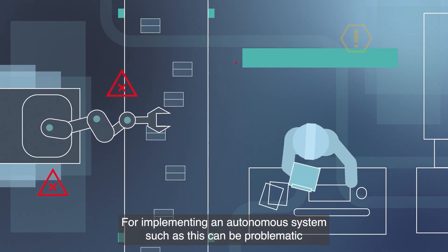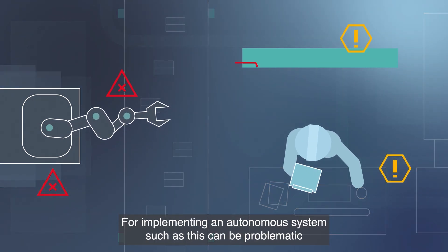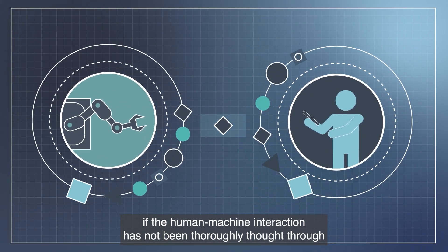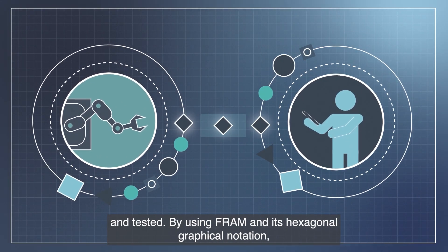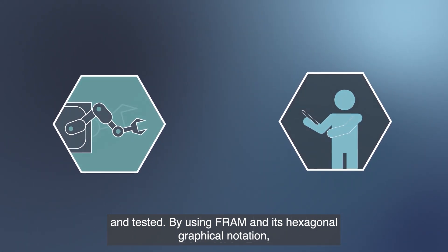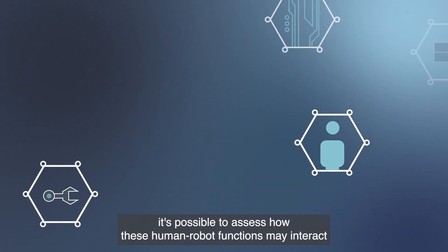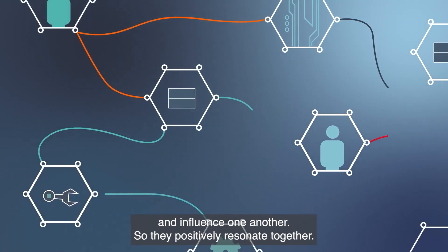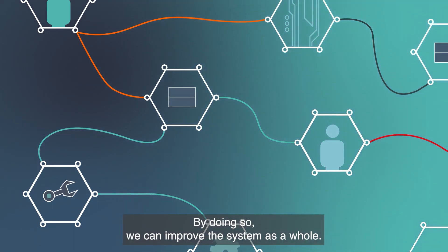But implementing an autonomous system such as this can be problematic if the human-machine interaction has not been thoroughly thought through and tested. By using FRAM and its hexagonal graphical notation, it's possible to assess how these human-robot functions may interact and influence one another so they positively resonate together. By doing so, we can improve the system as a whole.